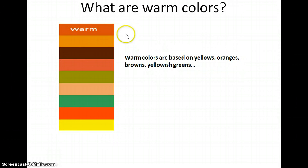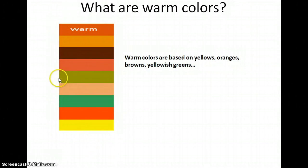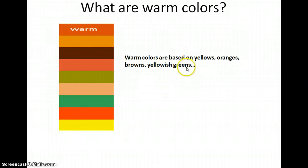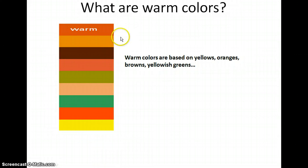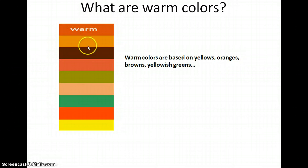To start off, what are warm colors? You have an example of different warm colors here. Warm colors are based on yellows, oranges, browns, and yellow-greens. You can actually see that these colors feel warm when you look at them.